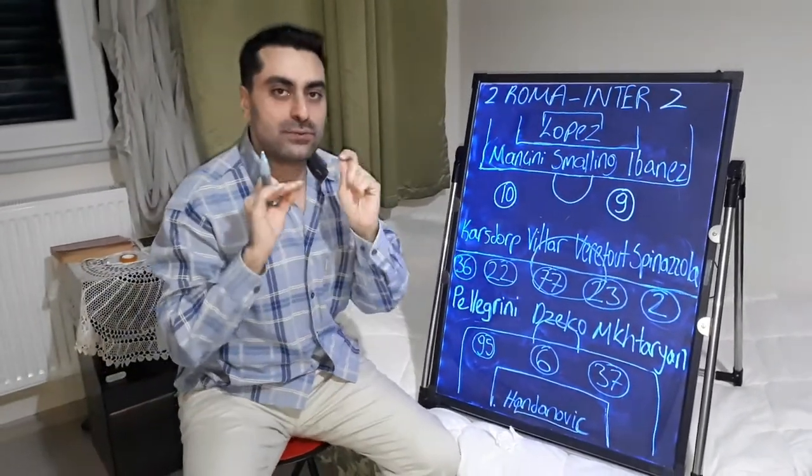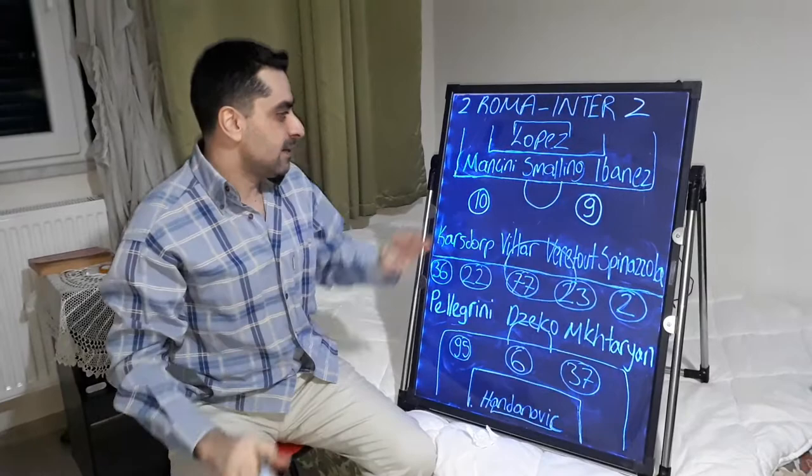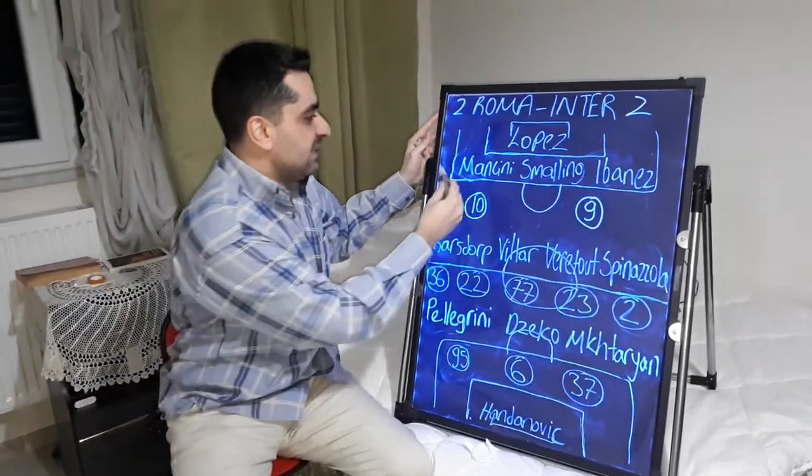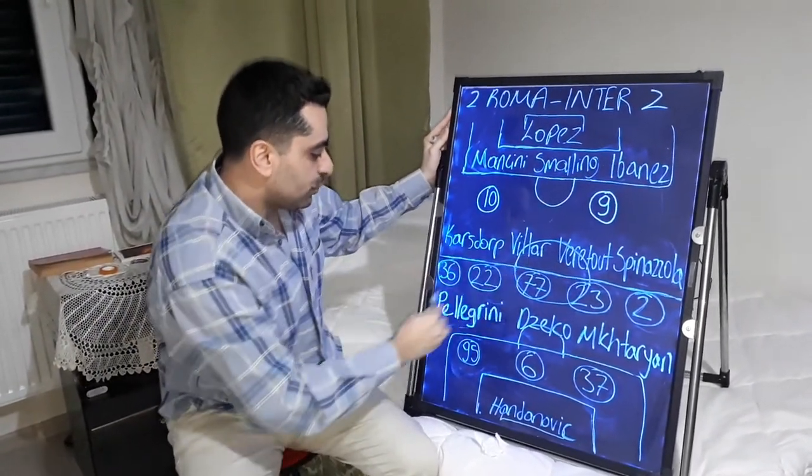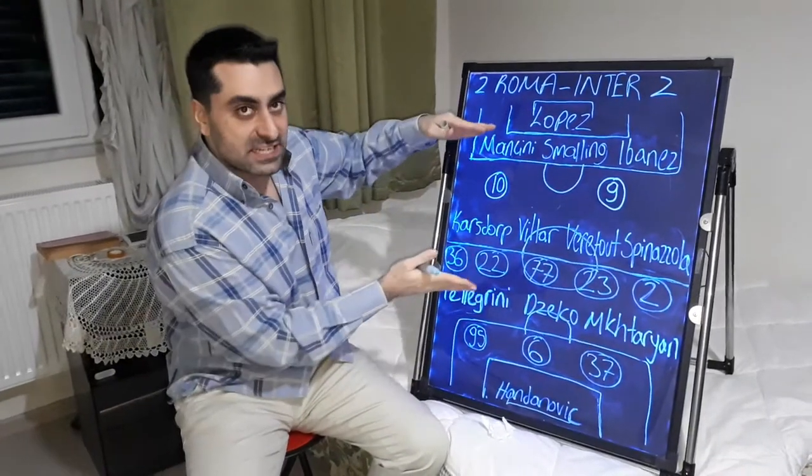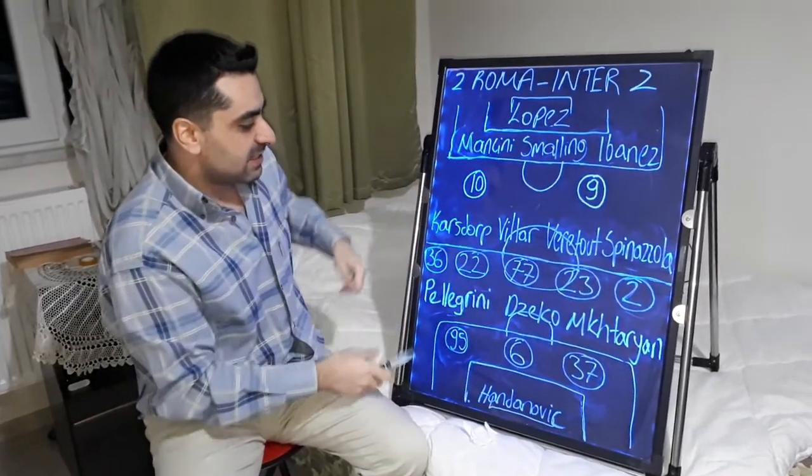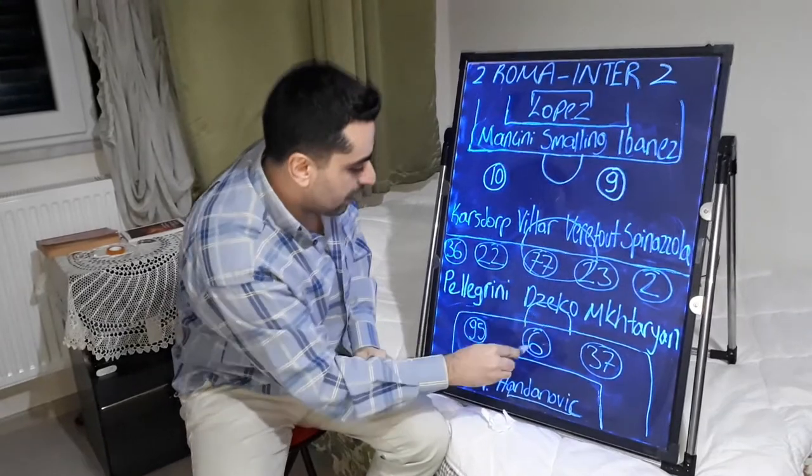Just I want to start with Roma's tactics. Roma played in 3-4-3 formation. I write Roma's players and just the numbers of Inter players.